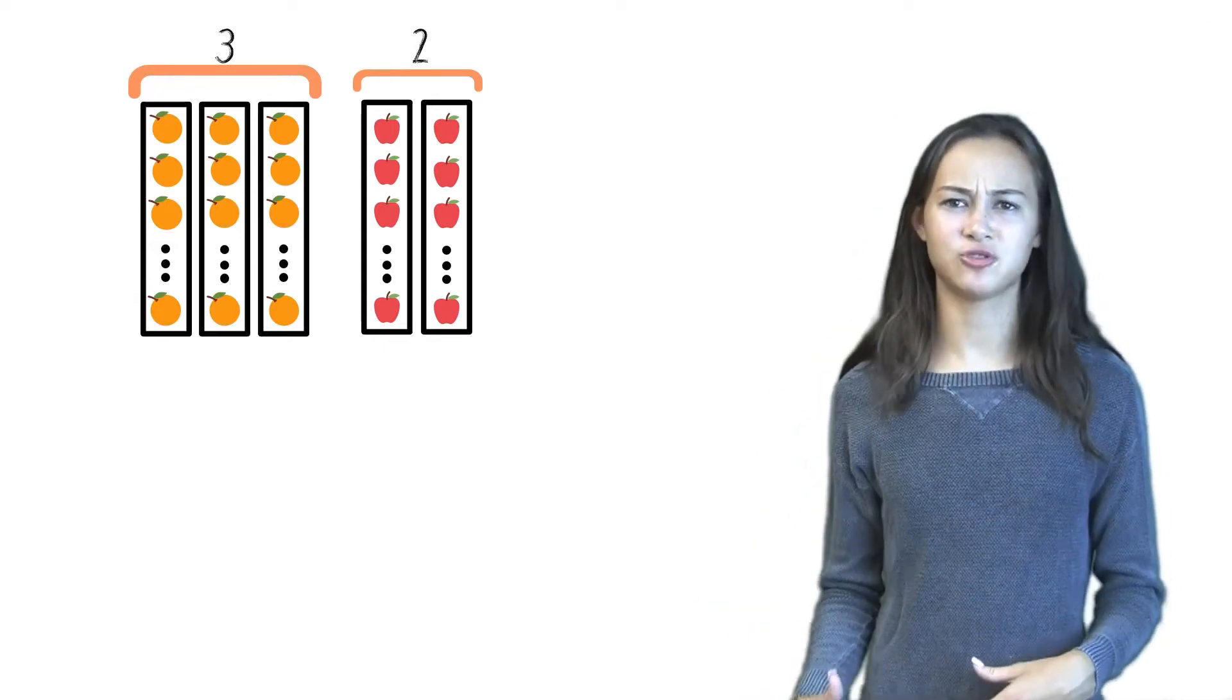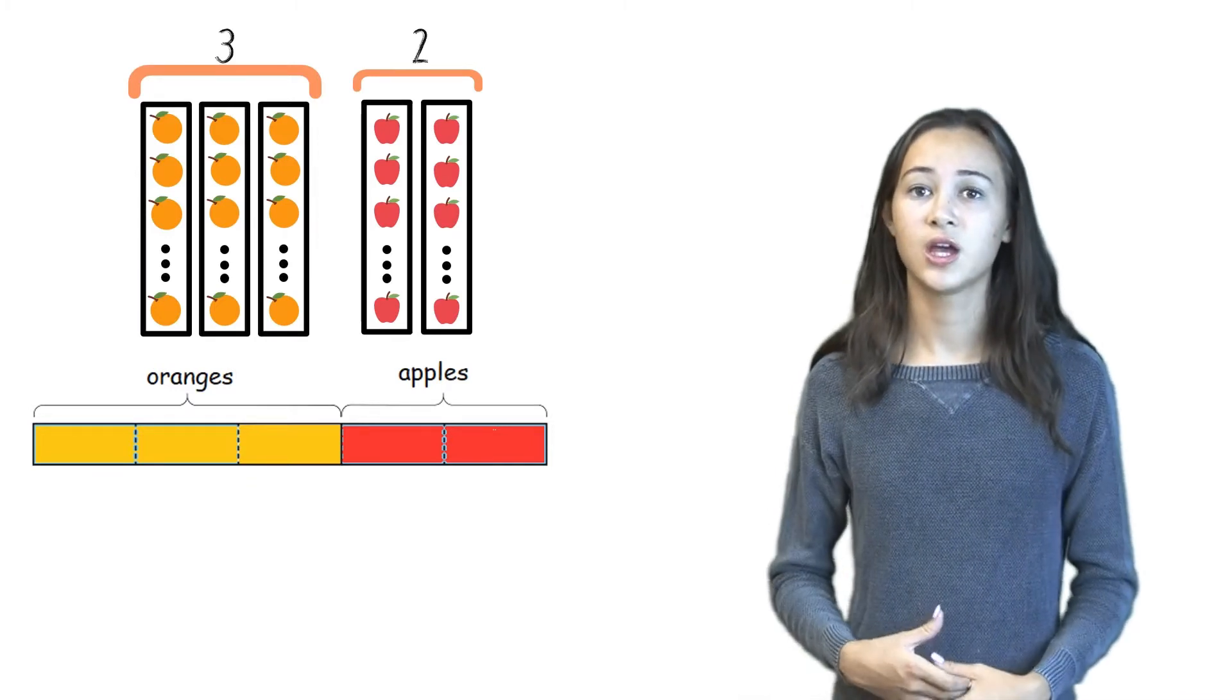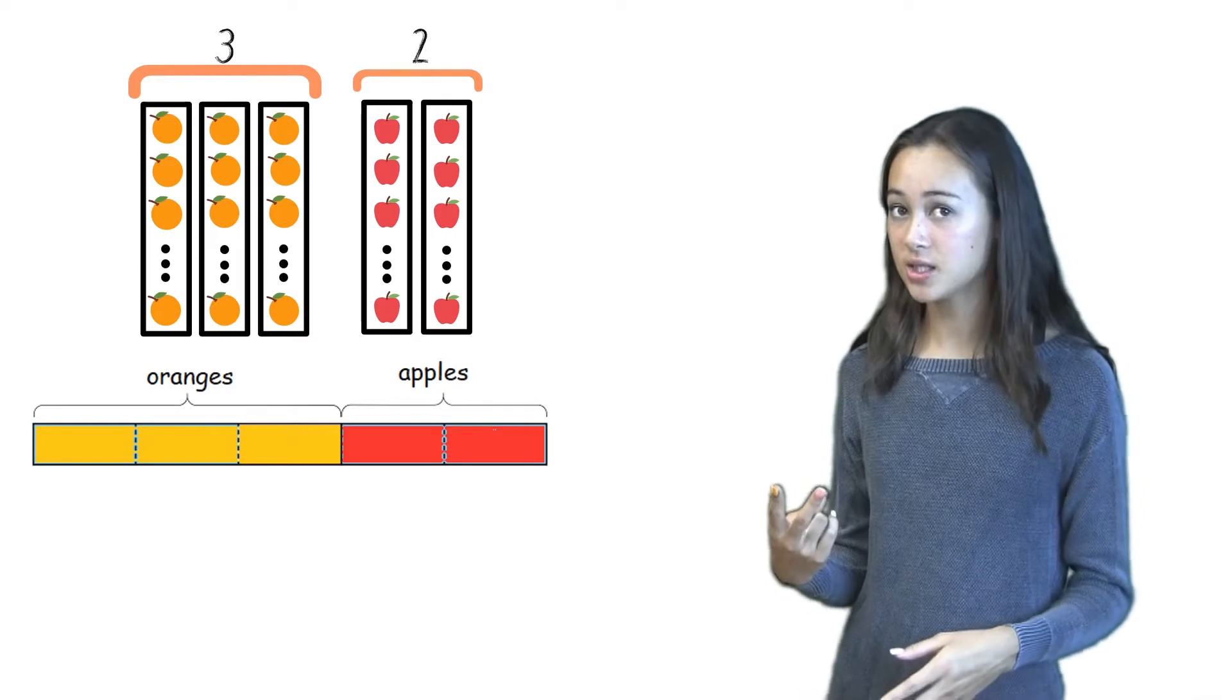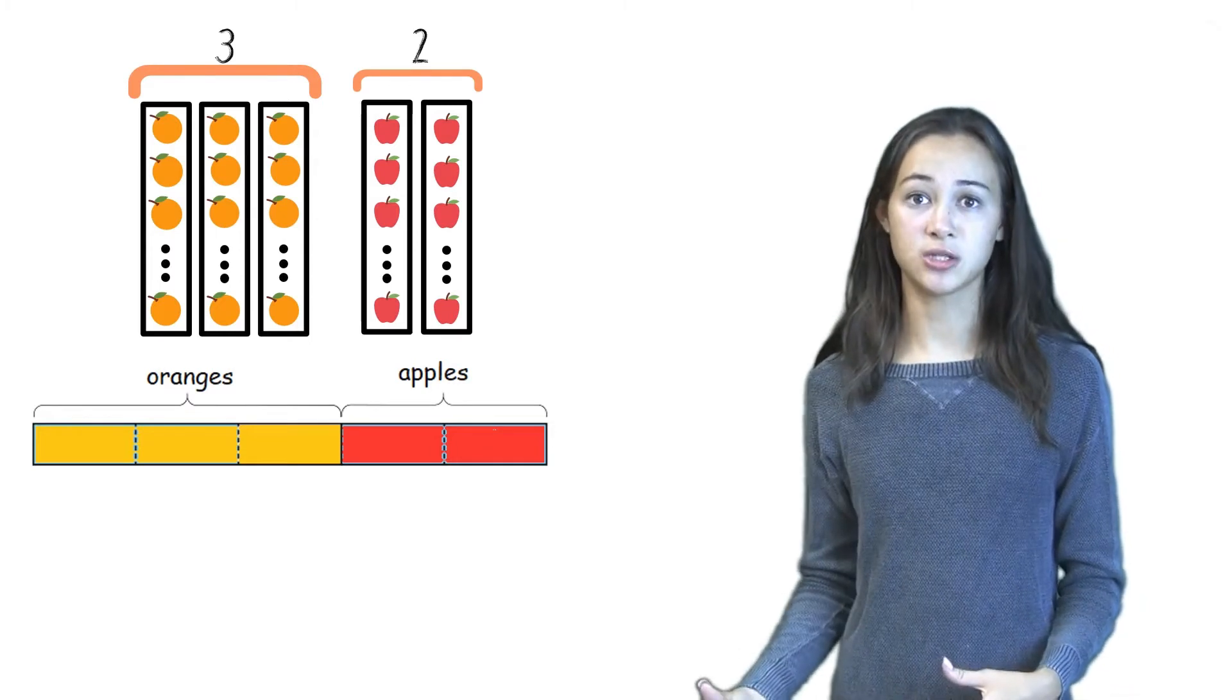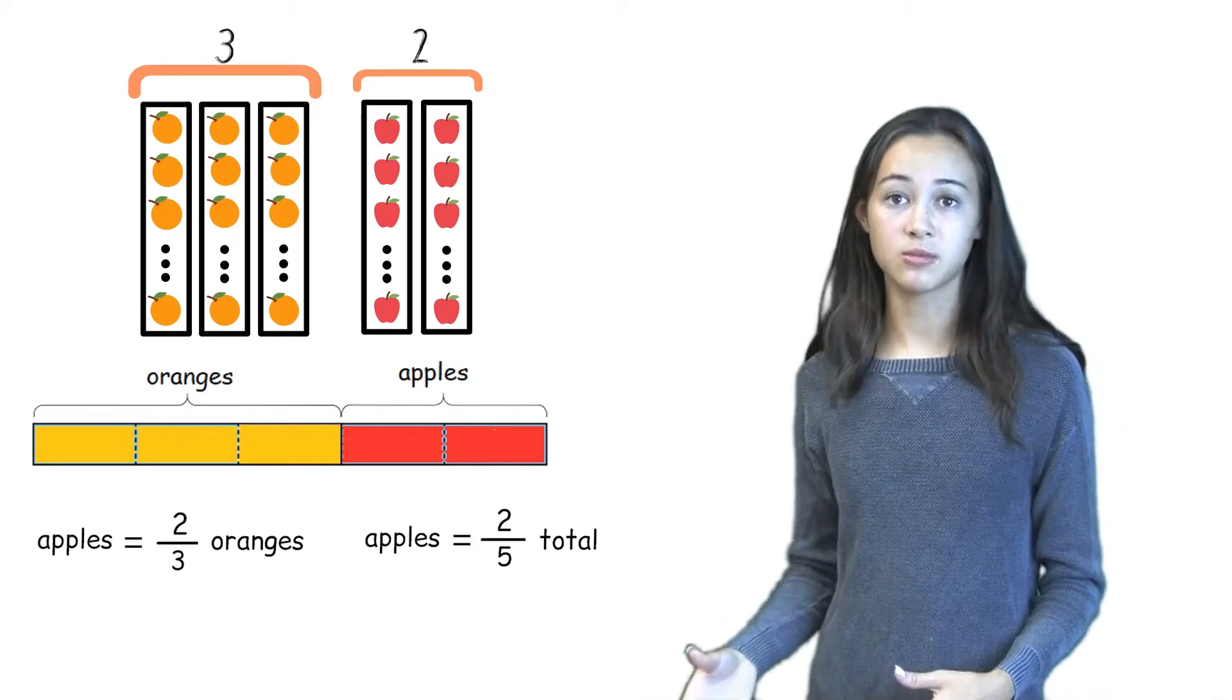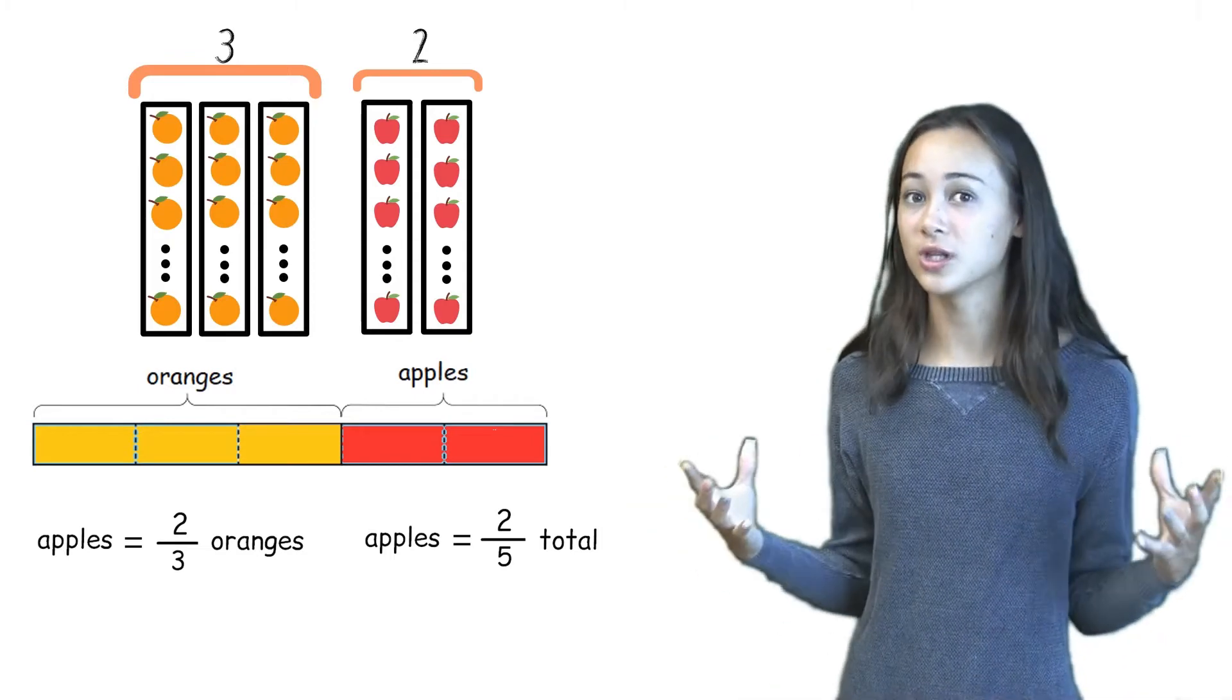And instead of drawing oranges and apples, we would use bar diagrams which would be much easier to draw. So we could have 3 boxes to represent the oranges and 2 boxes to represent the apples. Now we can easily see the relationships that we talked about earlier. The number of apples equals 2 thirds the number of oranges and the number of apples also being 2 fifths the total number of fruit.